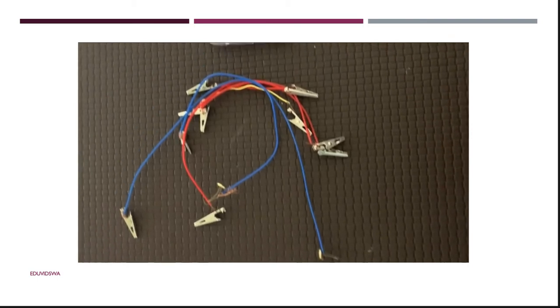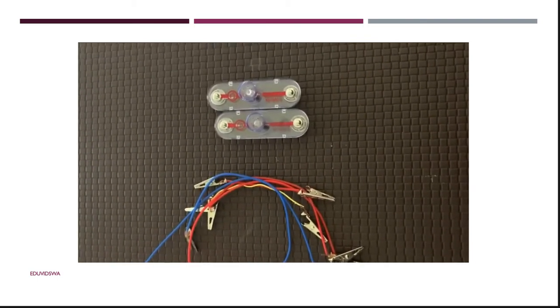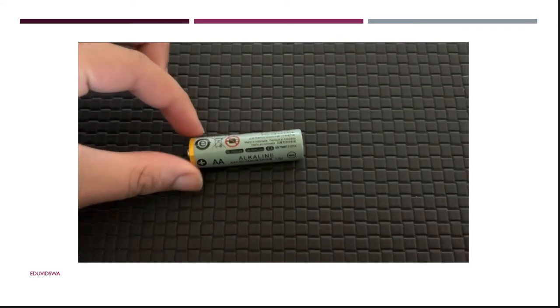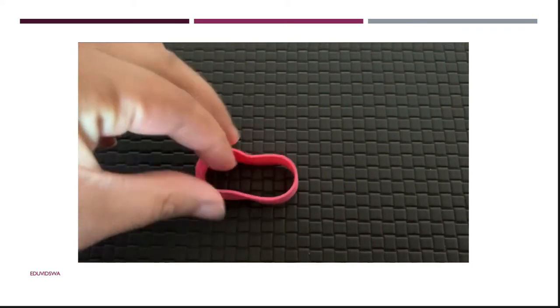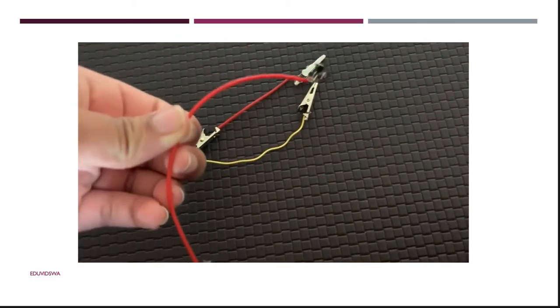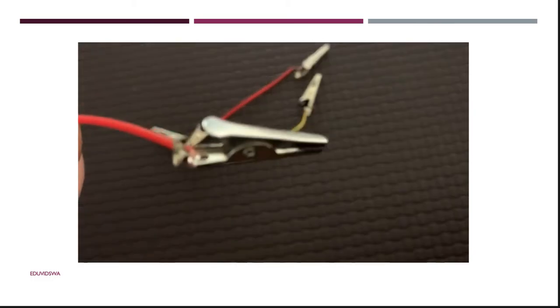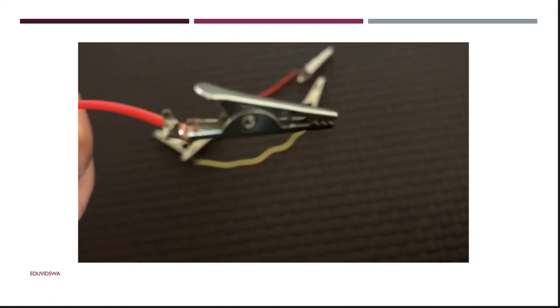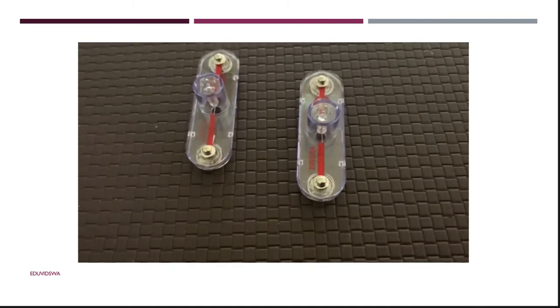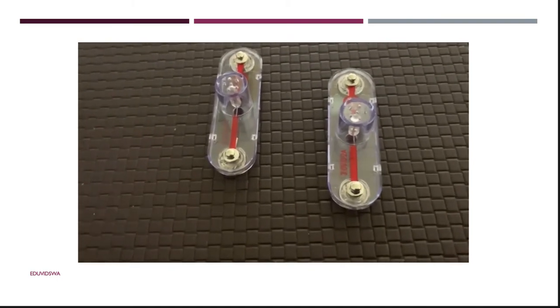I used a normal AA battery that you can find around your house. Next, I have this rubber band that wraps around the battery. Then, I also used wires which are attached to metal clips that are also conductors. Remember that conductors let electric current flow through. Lastly, we have LED lights with metal chips on the ends.